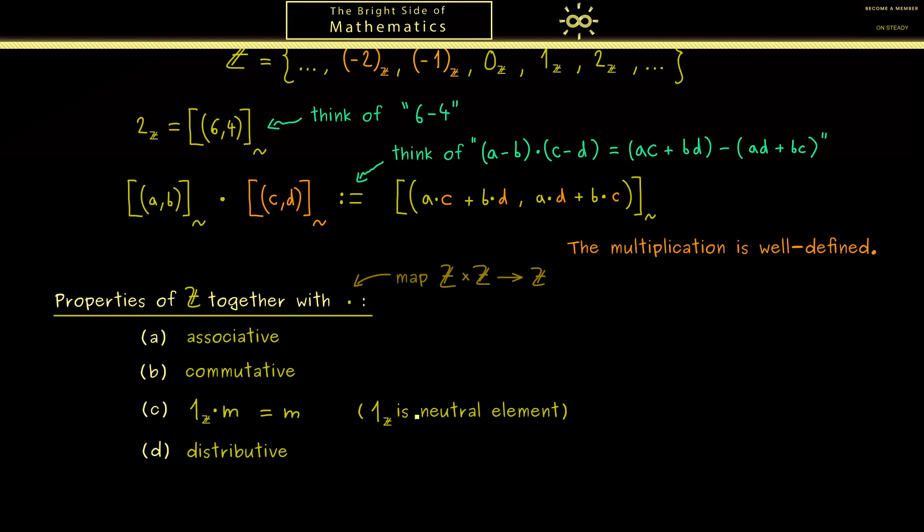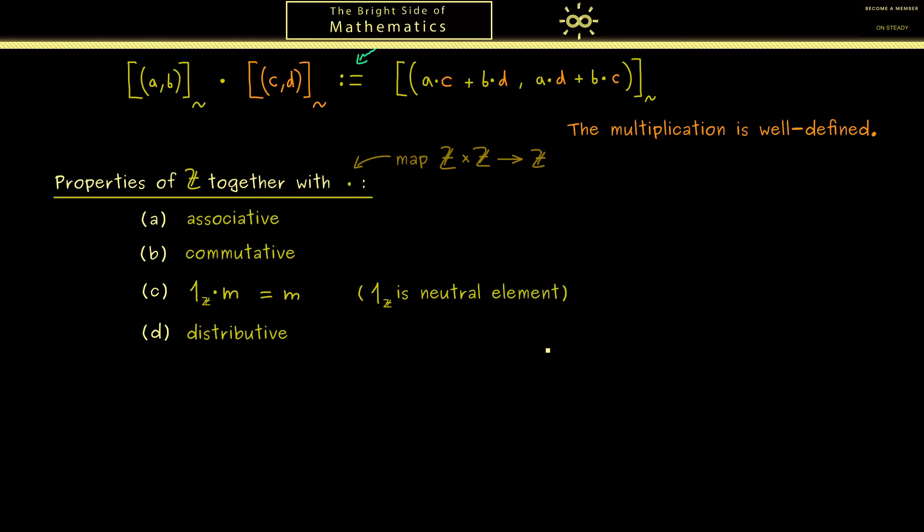Proving all these rules works like for the addition and shouldn't make any problems. For this reason let's look at some examples. So here we multiply the two integers 4 and 2. Of course we know they are given by these two equivalence classes. Then by the definition of the multiplication we have for the first position 4 times 2 plus 0 times 0. And the second position gets 4 times 0 plus 0 times 2. Hence you see it's not so surprising we indeed get out 8.